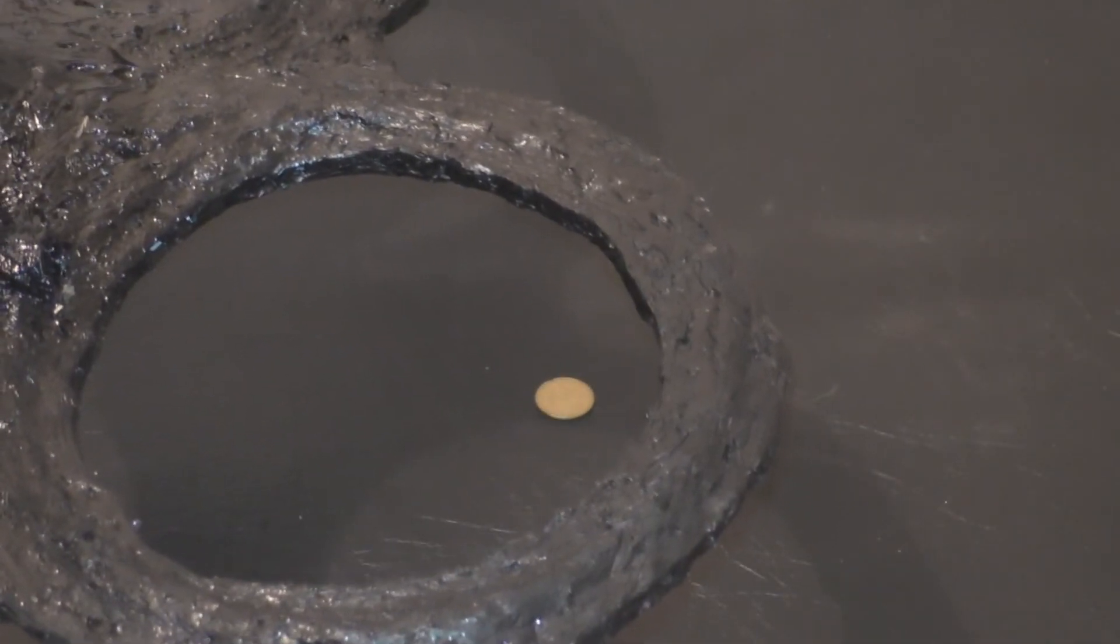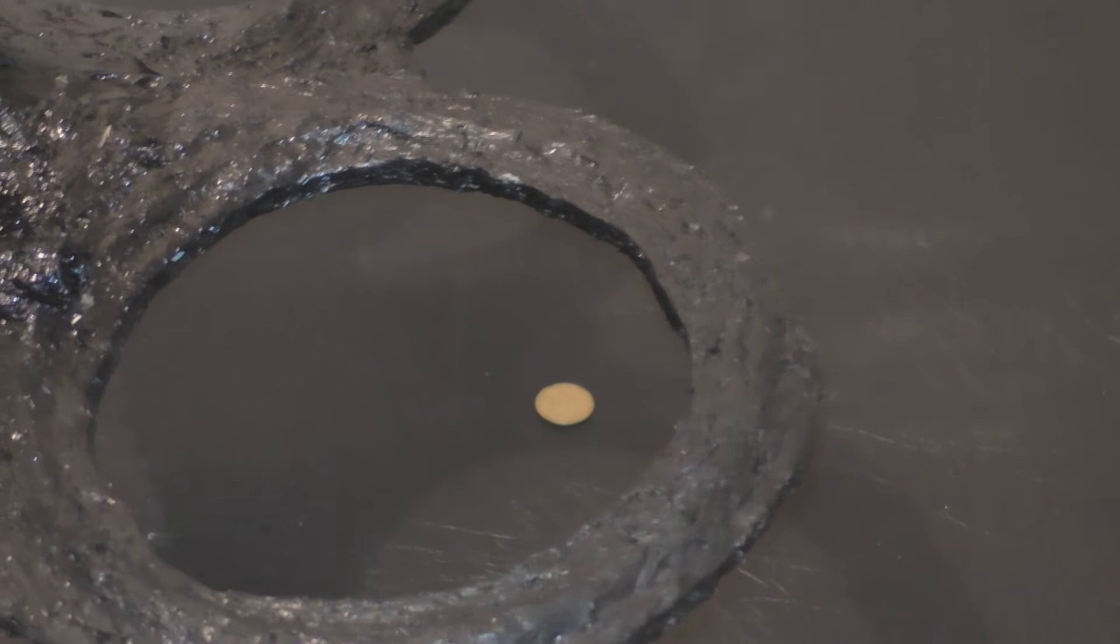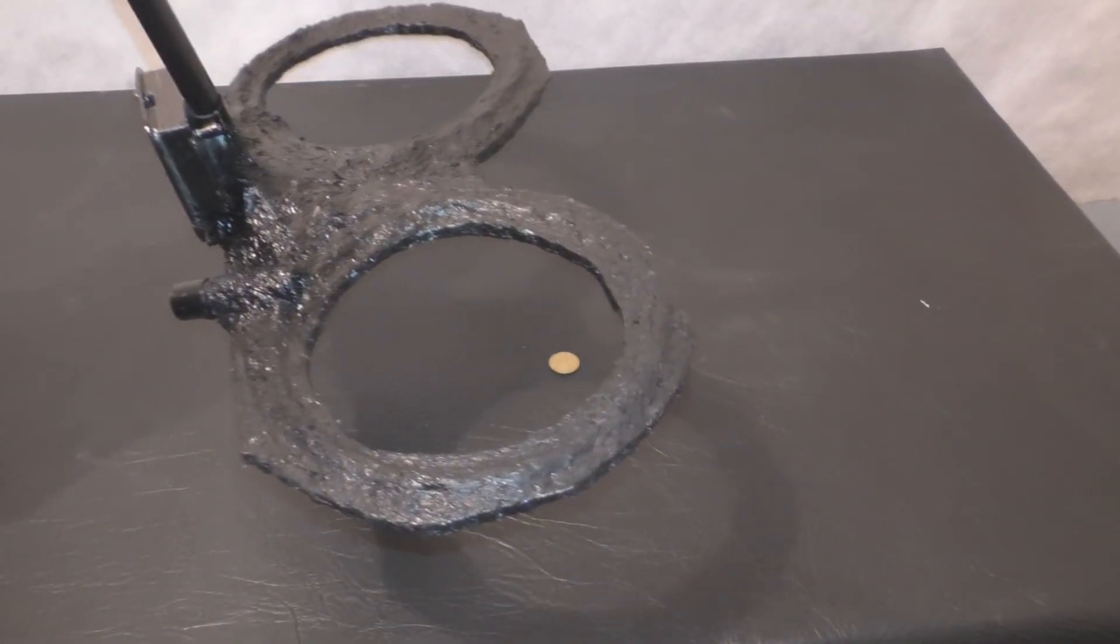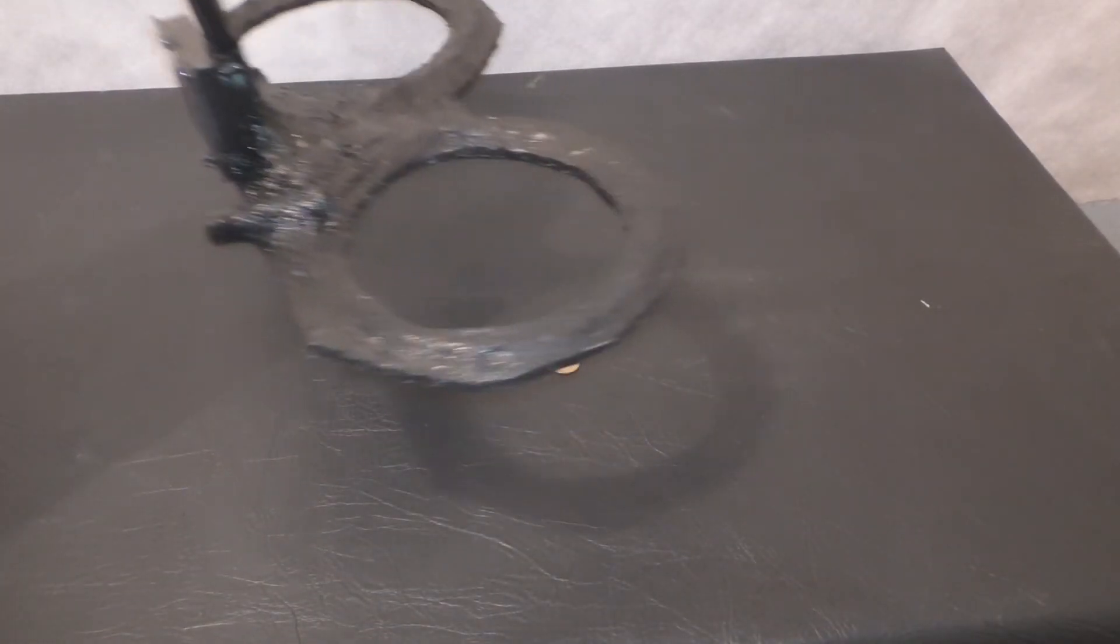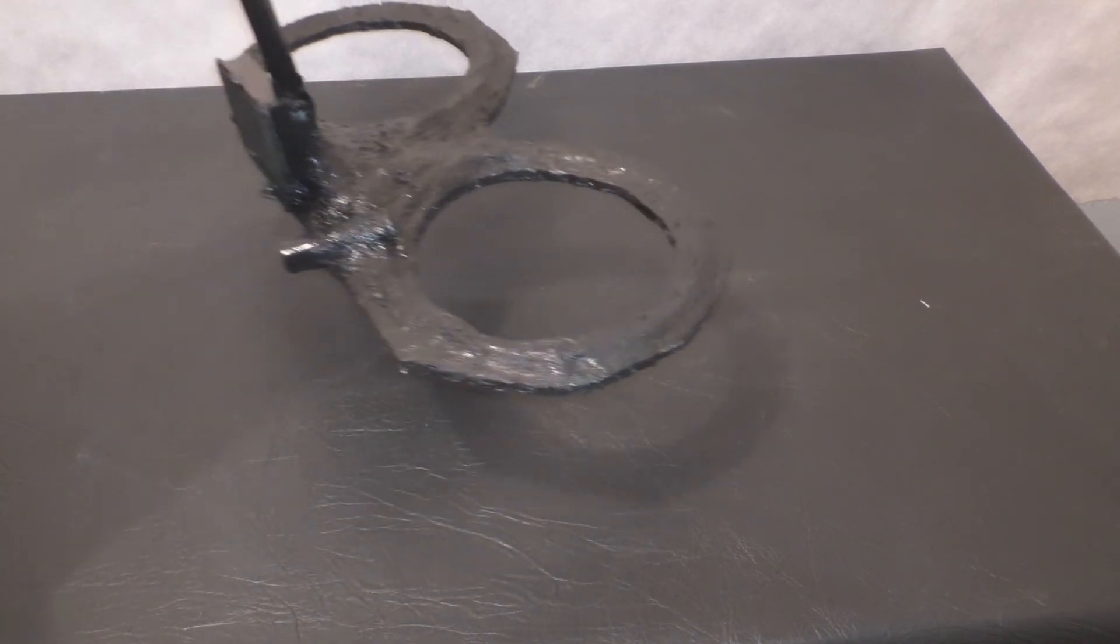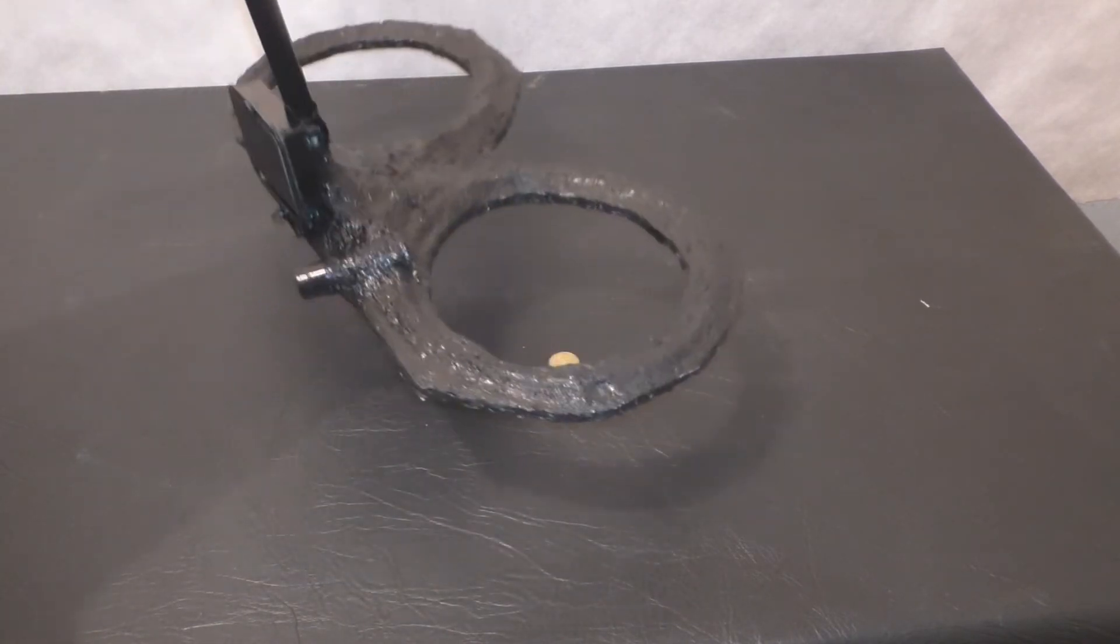So even smaller. A coin, this is our 25 kopecks Ukrainian. It sees perfectly.